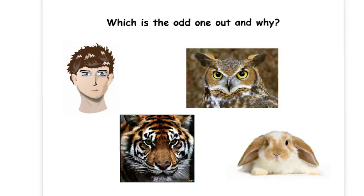Which one do you think is the odd one out and why? If we think about this from the perspective of their vision and how they see, then the odd one out is the rabbit. The other three all have forward-facing eyes and what is known as binocular vision. But the rabbit has eyes on the side of its head and what is called monocular vision.